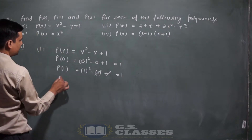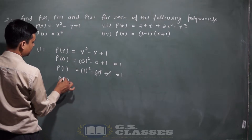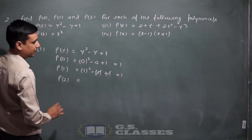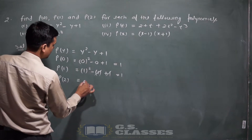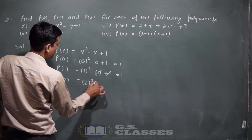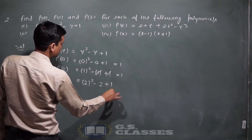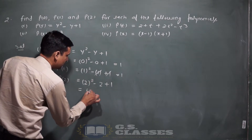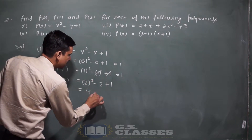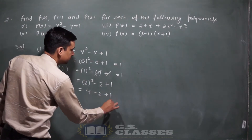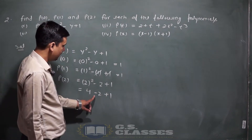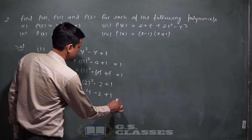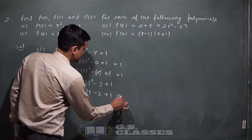P(2) का मतलब है y की value 2 put की जानी चाहिए। 2 का square, minus 2, plus 1। 2 का square = 4, minus 2, plus 1। 4 minus 2 = 2, plus 1 = 3। Answer है 3।